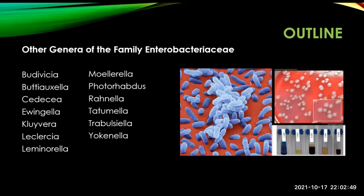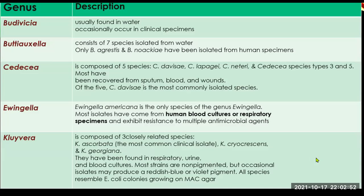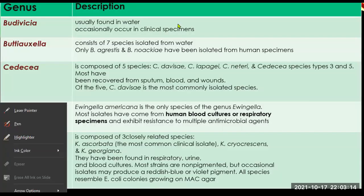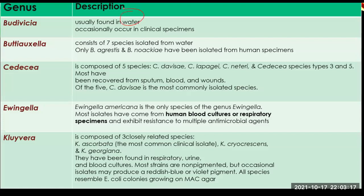Starting with a tabulated presentation: for the genus Budovicia, they are usually found in water and occasionally occur in clinical specimens. For Buttiauxella, it consists of seven species isolated from water, so both of them are found in water, and only B. agrestis and B. noackiae have been isolated from human specimens.